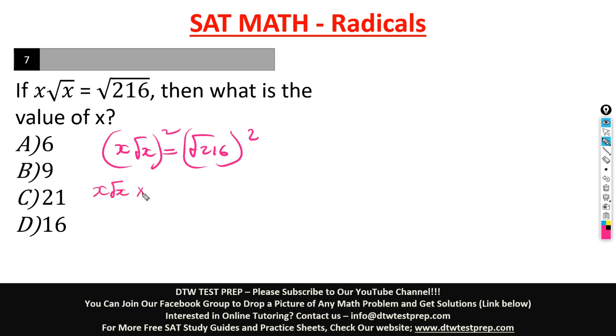Okay, that would be x root x times x square root x. Alright, that would be this x times this x is x squared. And this square root x times this square root x, you know, it will cancel off, and you are left with just x. Equal to, when you square a square root, it just cancels this out, and you are left with 216. You see, we've cancelled out all the square roots, right?